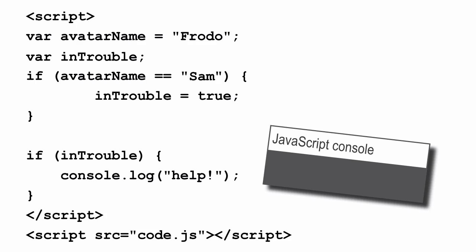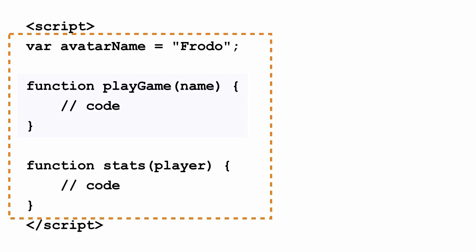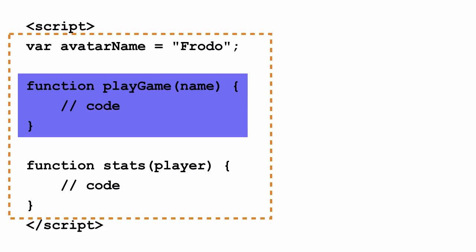We've talked a lot about global scope, so what about local scope? Local scope is created by a function. Whenever you have a function, you've got local scope. Each function scope is separate, so whatever you do in one function won't affect what you do in another. The variables you've declared globally are visible in the local scope, but the variables you declare in functions are not visible in the global scope.